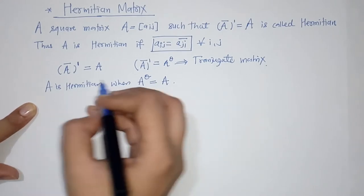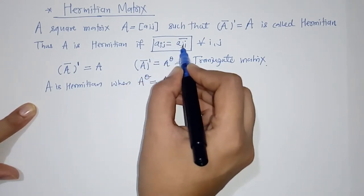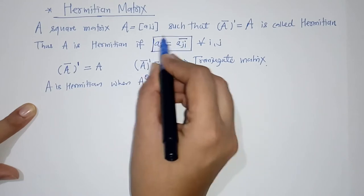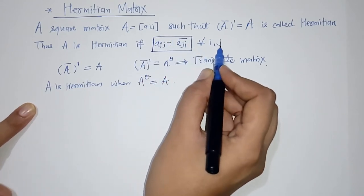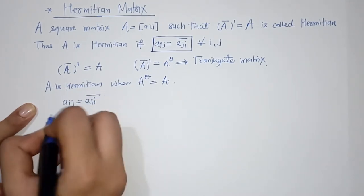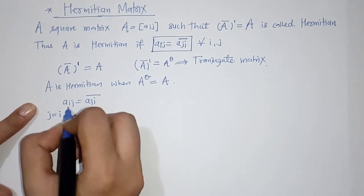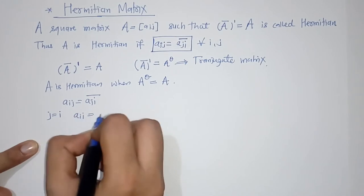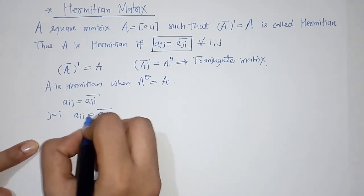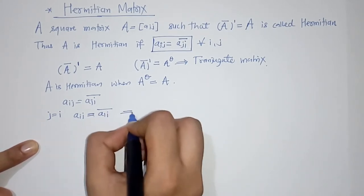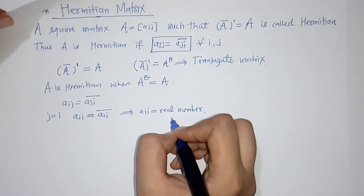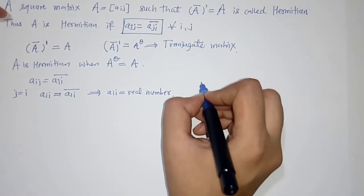So A is Hermitian when A raised to theta equals A. The condition is: A-i-j equals the complex conjugate of A-j-i, meaning A-i-j and A-j-i are conjugates of each other. Now if we put j equals i for the diagonal elements, we get A-i-i equals its own conjugate A-i-i bar.